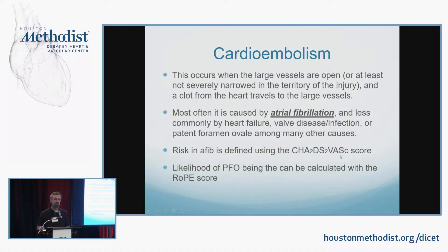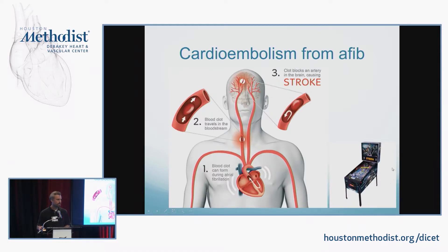As far as cardioembolism, it's most often caused by atrial fibrillation, less commonly by heart failure or valve disease. You can assess your risk of AFib looking at the CHA₂DS₂-VASc scores. PFO would not be considered in the cardioembolism category — it's technically put in the cryptogenic category. But if a patient's workup is negative and you're trying to decide how likely the PFO found is the cause of stroke, you can look up a ROPE score on MedCalc, which is very helpful. When discussing with non-cardiologists, I describe a cardioembolism stroke as being like a pinball in a pinball machine, finding its way from the origin up into the brain.